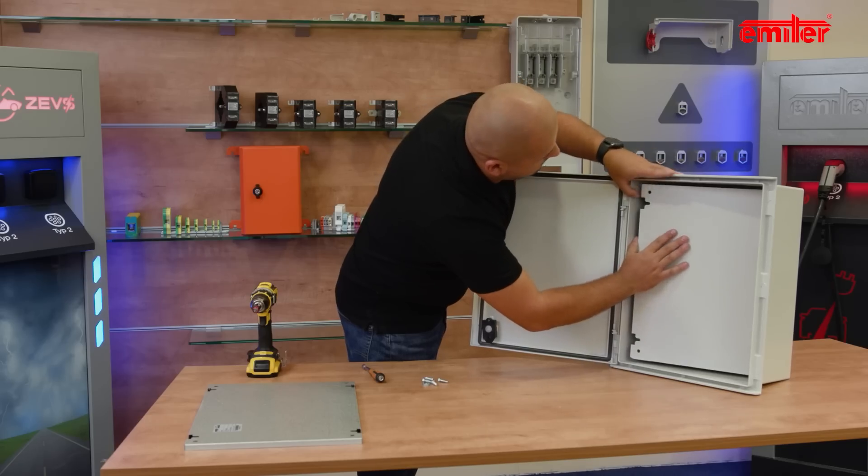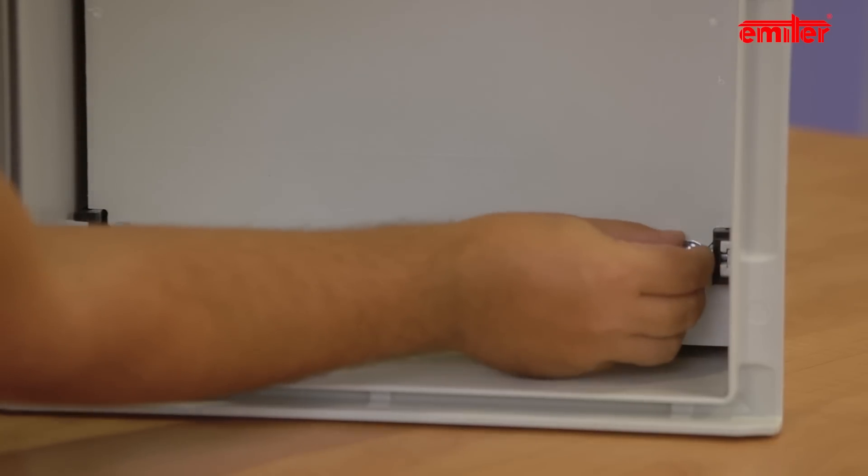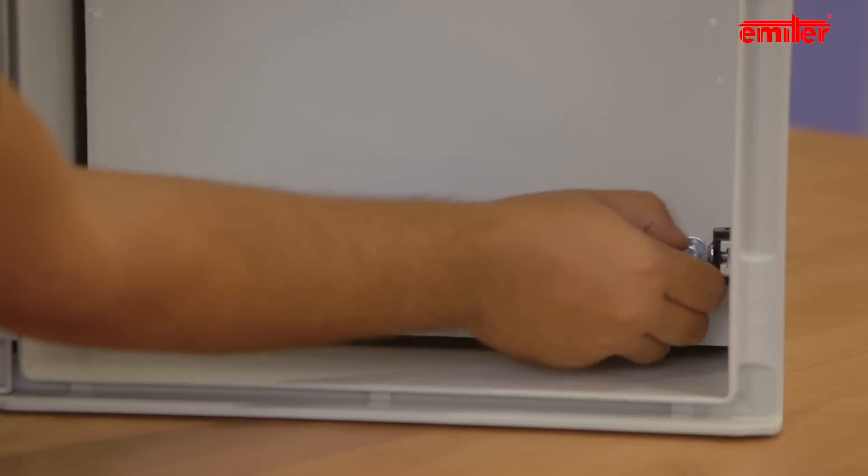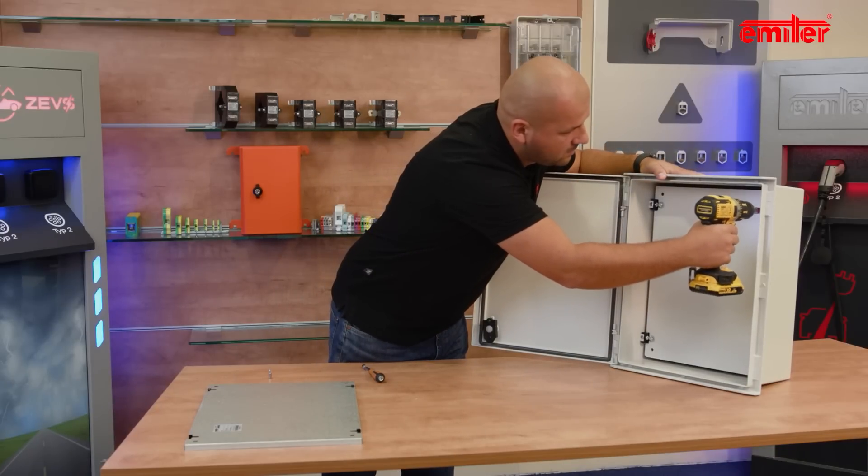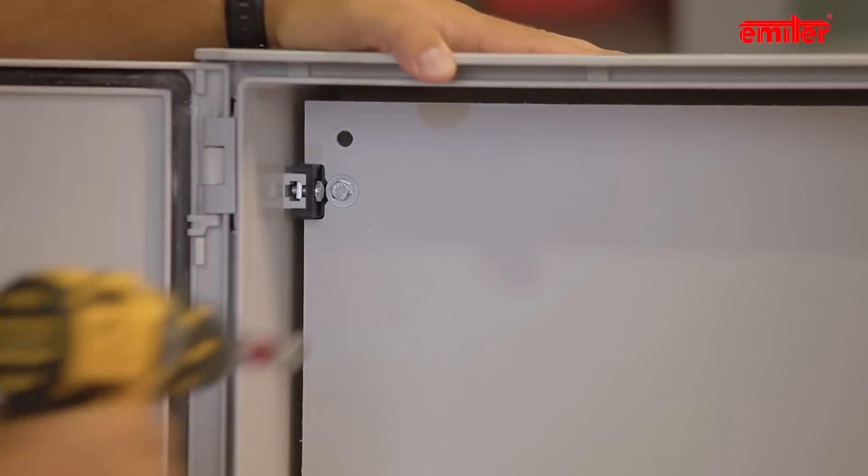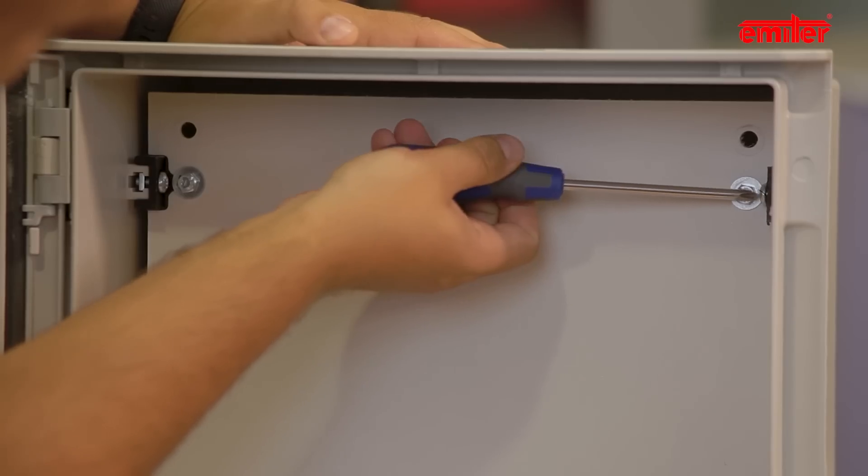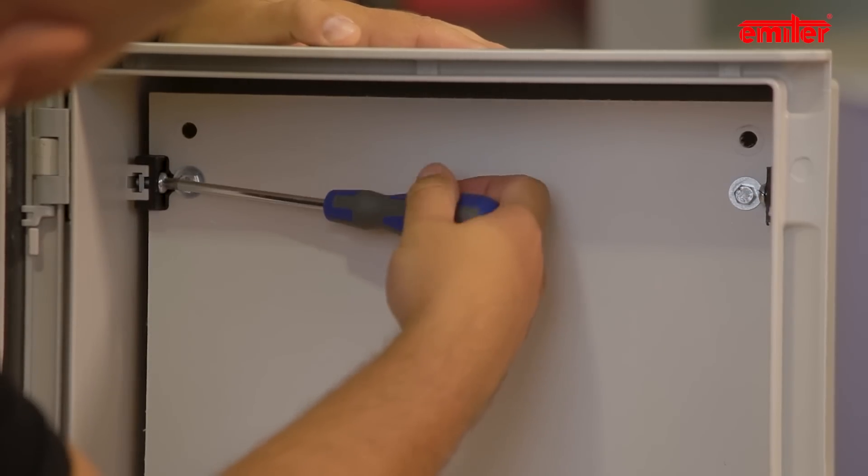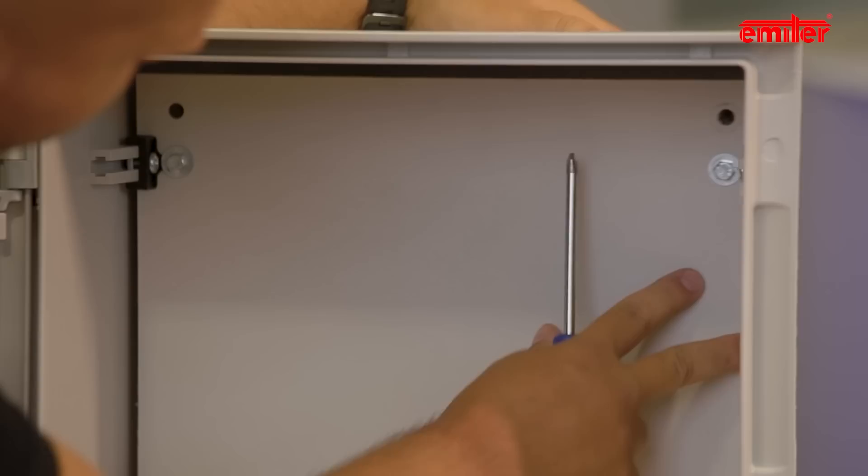Then we install the mounting plate. Now we are able to adjust the depth of the installation. For this purpose, we loosen the bolts, adjust the depth, and fasten the bolts again.